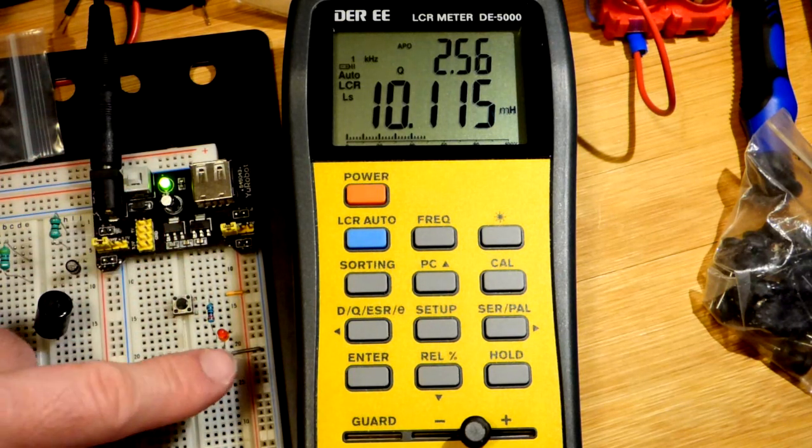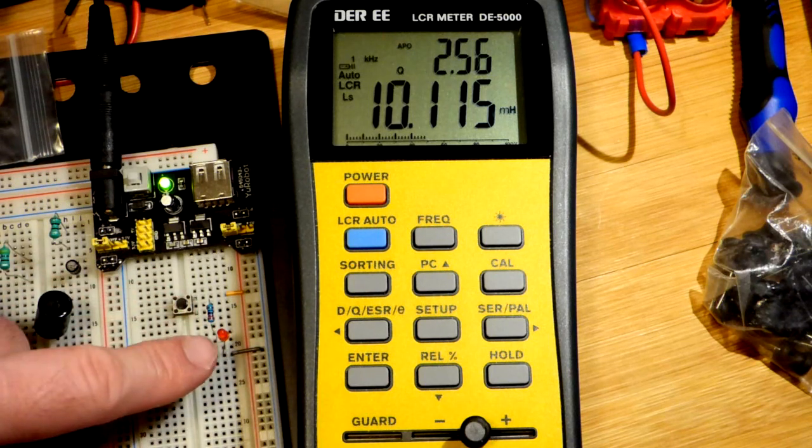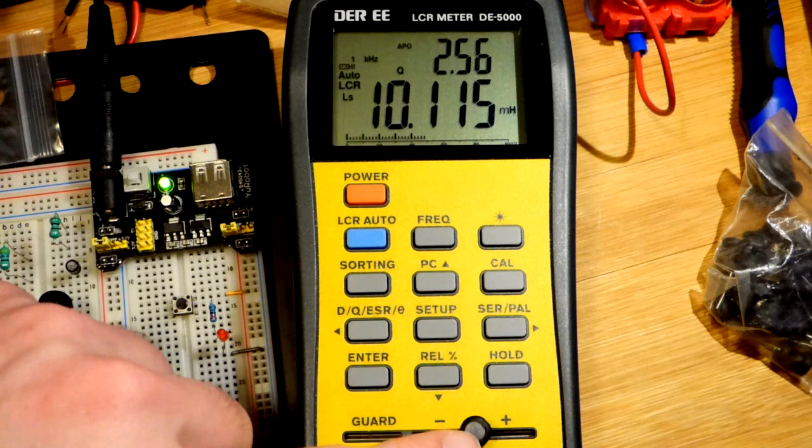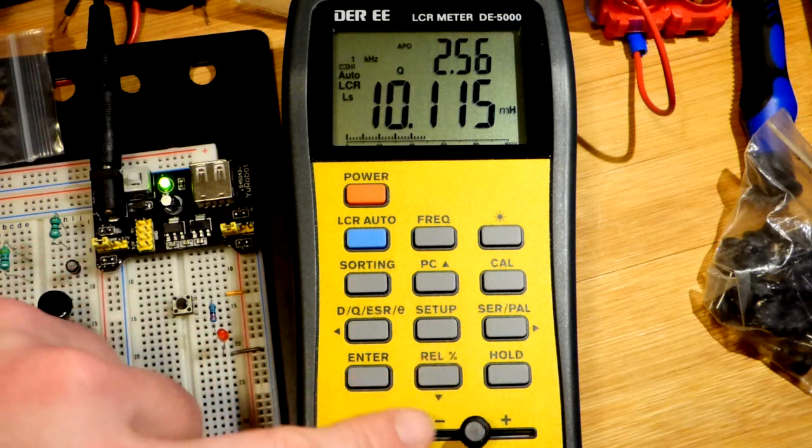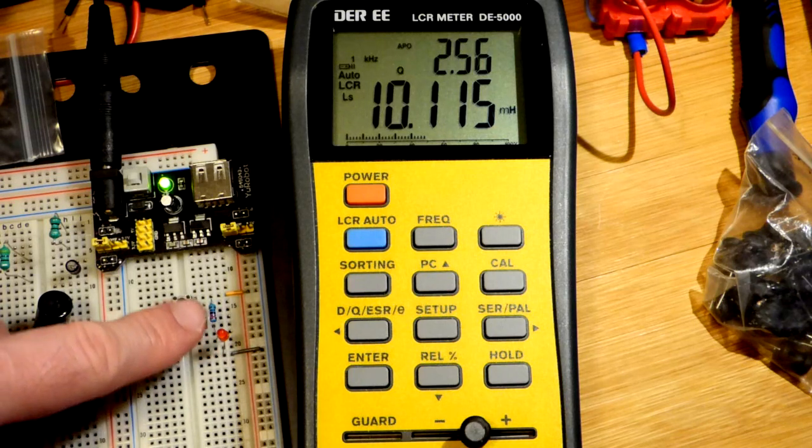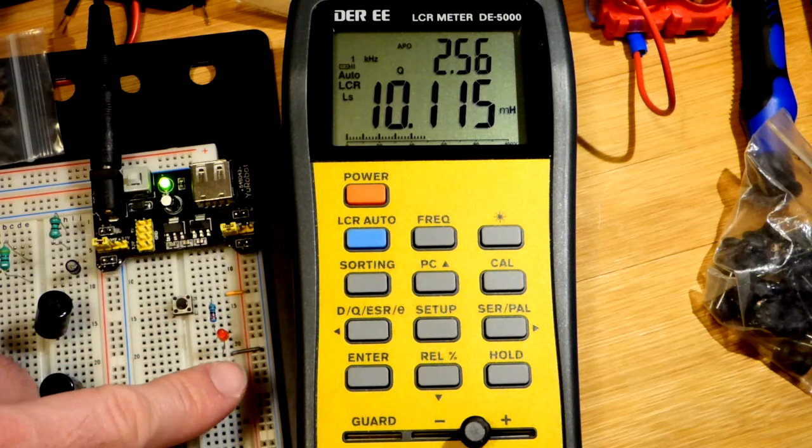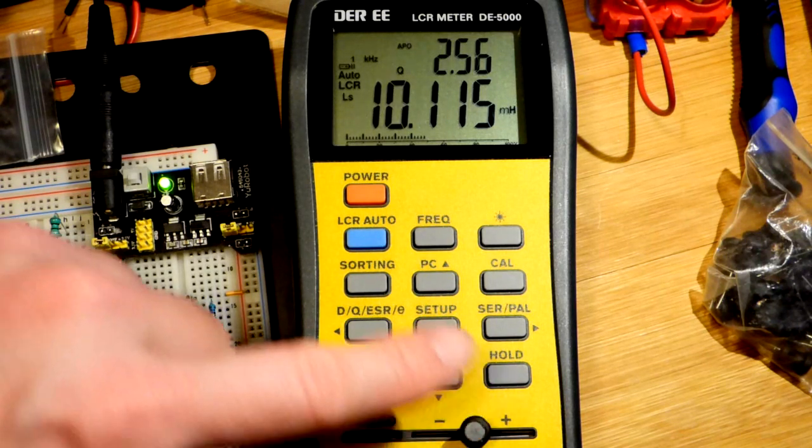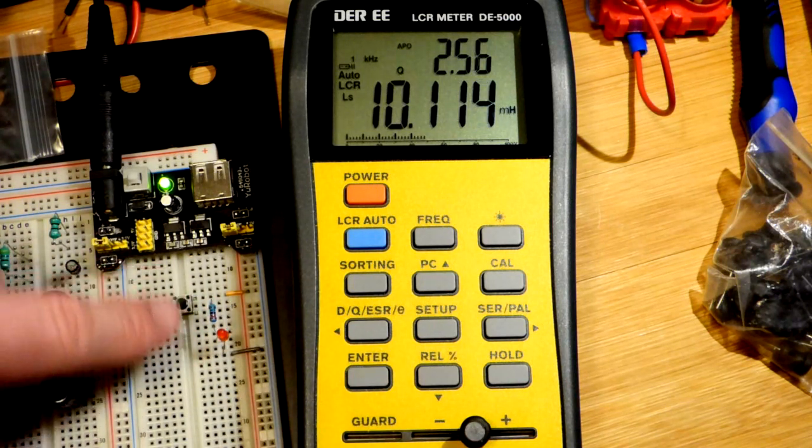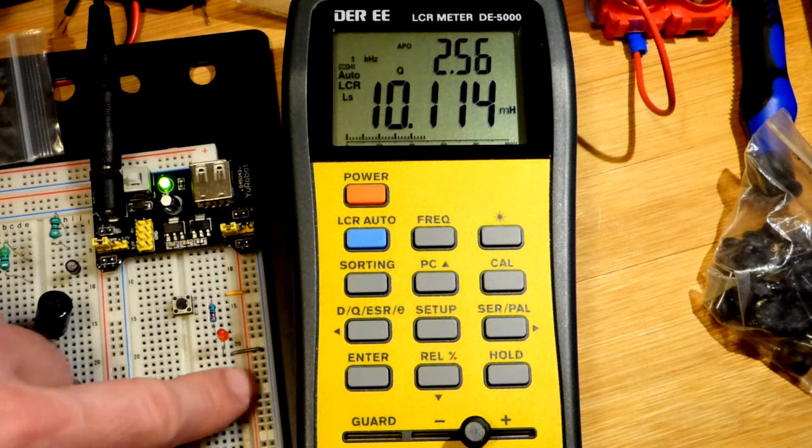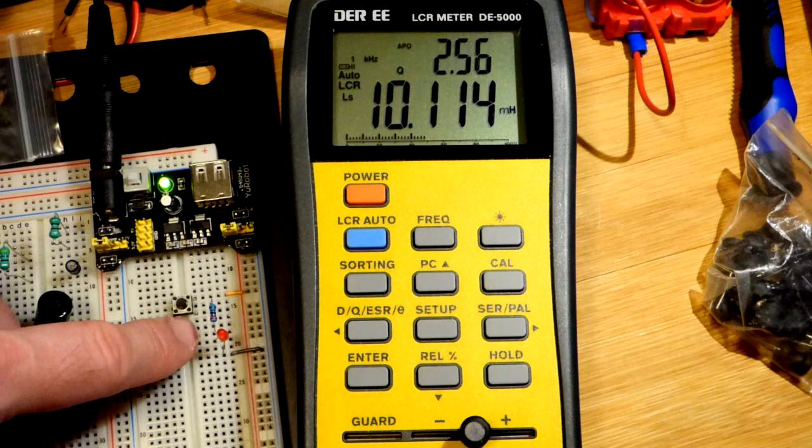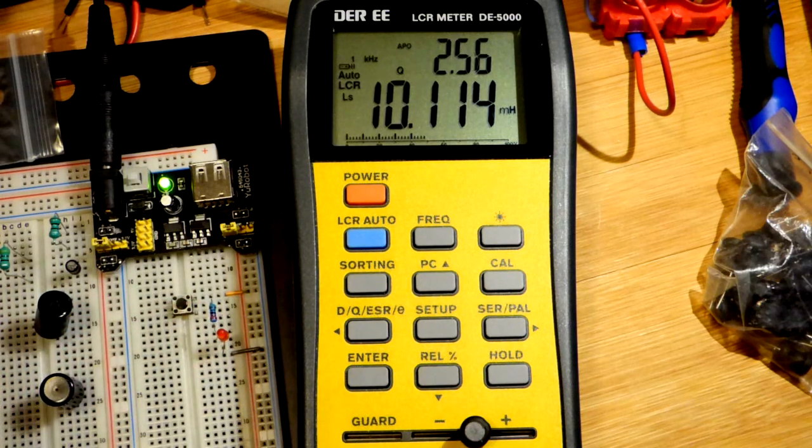Usually you have a diode—I used an LED—to allow current to keep going through the inductor. The diode is reverse biased as far as the circuit is concerned, but it gives a path for the inductor to discharge. Once you cut power, the negative side of the inductor becomes positive and the positive side becomes negative, so the diode can conduct.